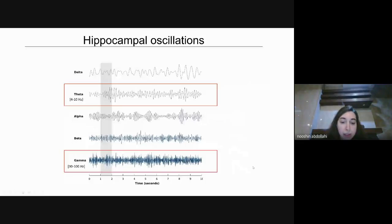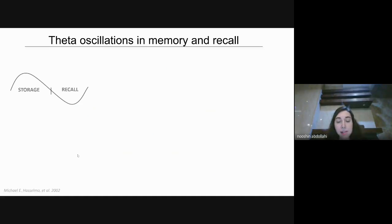It's been shown that different oscillations are generated in the hippocampus. The main ones are theta, which is 4 to 10 hertz, and gamma, which is 30 to 100 hertz. I'm going to focus on theta oscillation, and then Carol is going to talk about gamma oscillation. There are many studies trying to understand how theta oscillation is generated and the relationship between theta oscillation and memory and recall. And in this paper, it's been shown that storage of new information occurs in half cycle of theta, and the other half is about recalling information.